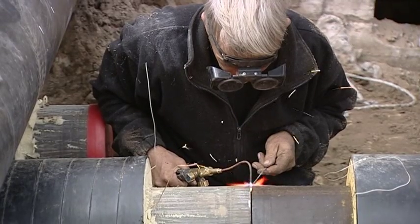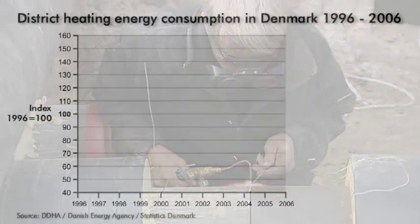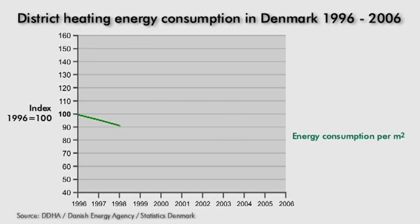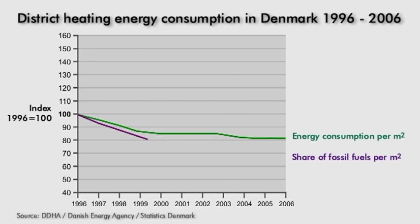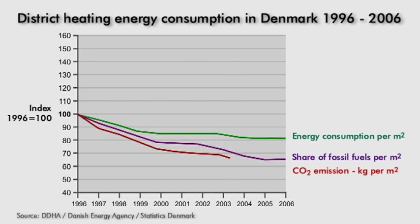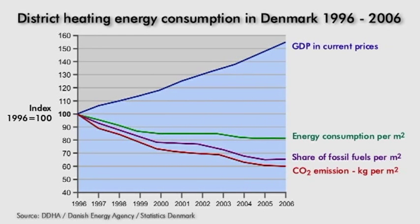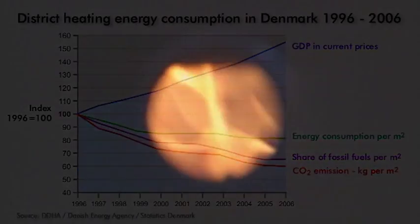The economic and environmental advantages of district heating in Denmark are well documented. During the decade from 1996 to 2006, district heating resulted in a reduction of energy consumed per square meter and a similar reduction in the consumption of fossil fuels. Likewise, CO2 emissions were also dramatically reduced. Seen in relation to the economic growth in the same period, this represents a considerable increase in energy efficiency.